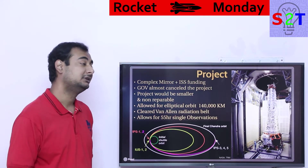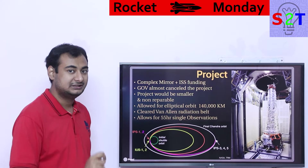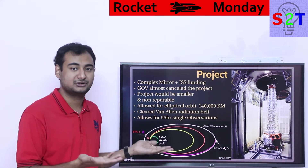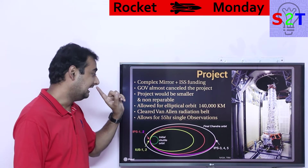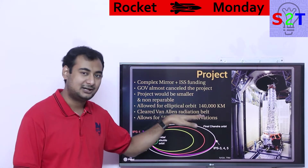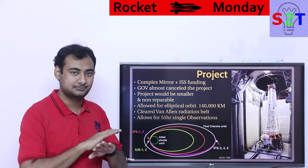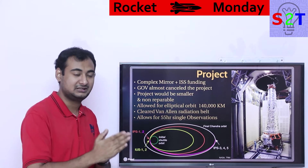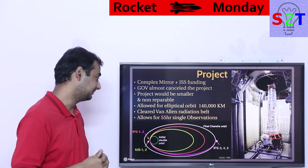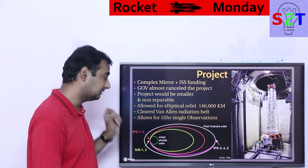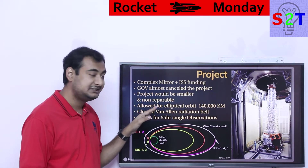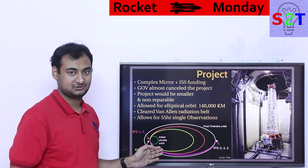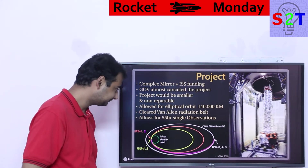After the budget reductions, they realized something interesting: they could put Chandra into an elliptical orbit, sending it much farther out. Nobody was going to go repair it anyway, so why stay in low orbit? They sent it into an elliptical orbit where at its highest point it's around 140,000 kilometers away from Earth — completely clearing the Van Allen radiation belts. That means no radiation saturating the instruments. The budget cut actually gave Chandra a major advantage: much cleaner high-energy observations, and because of its elliptical orbit, it can observe continuously for 55-hour-long exposures.